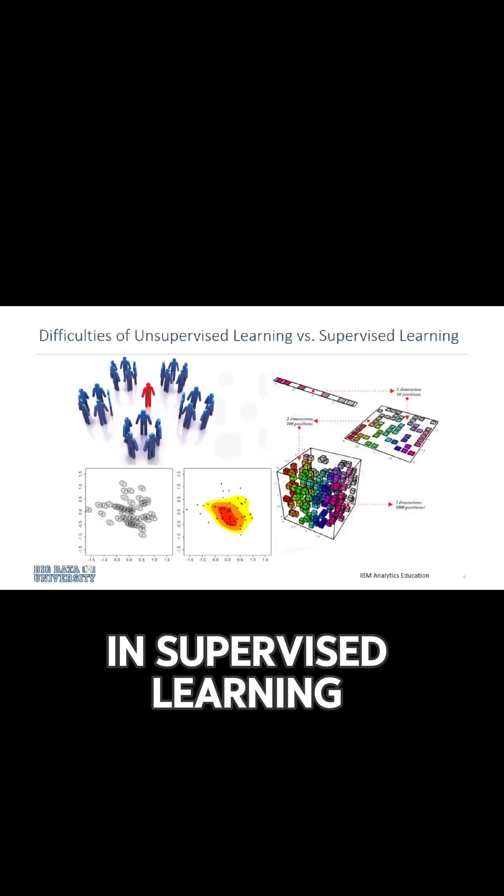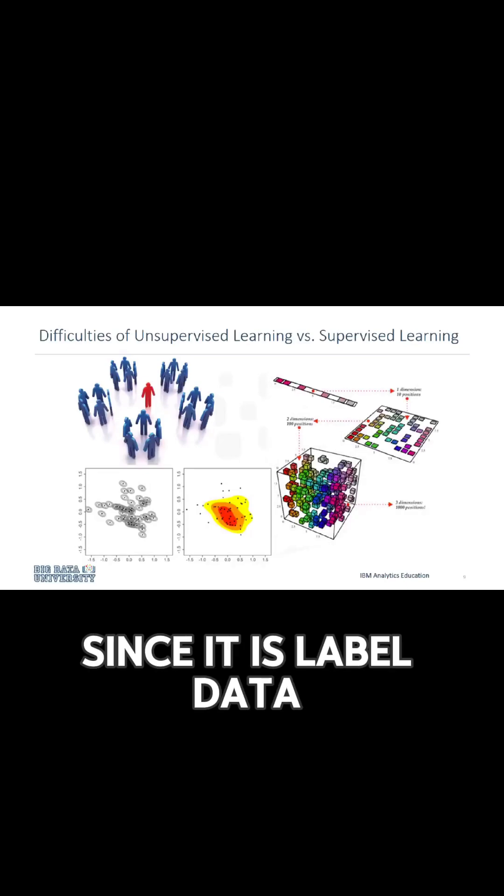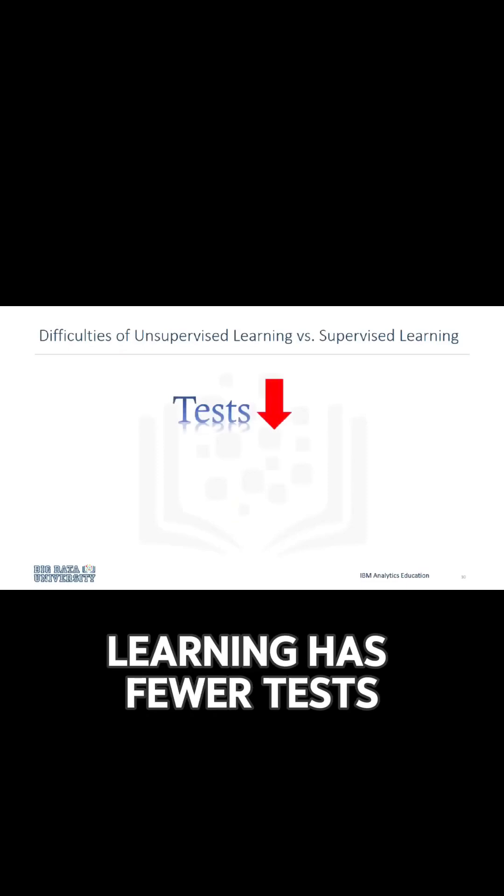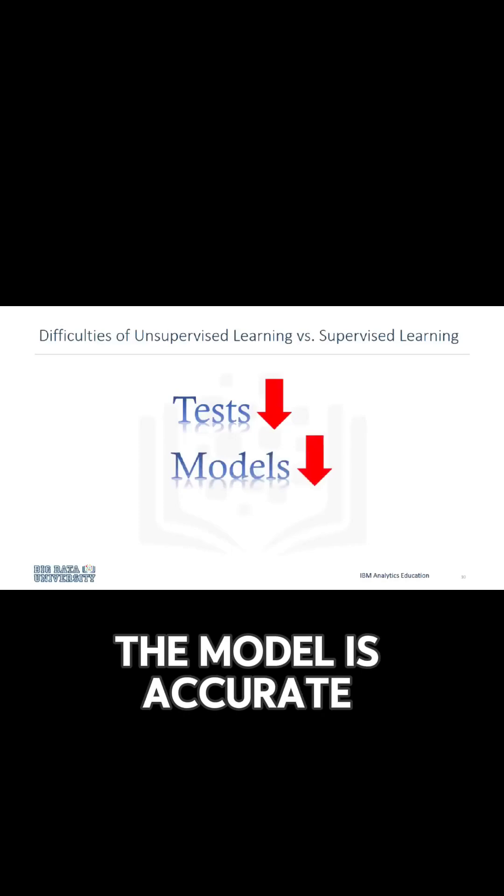In supervised learning, however, we know what kind of data we're dealing with since it is labeled data. In comparison to supervised learning, unsupervised learning has fewer tests and fewer models that can be used in order to ensure the outcome of the model is accurate.